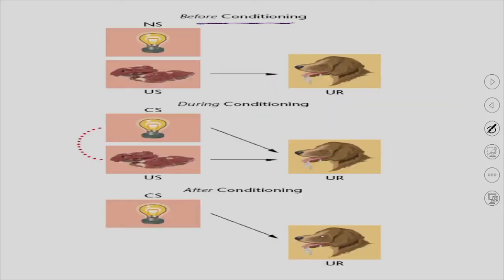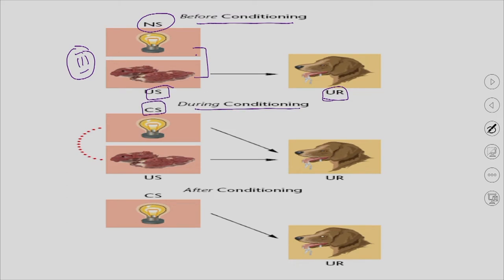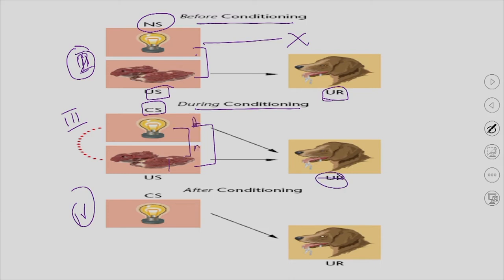Looking at the diagram: before conditioning, the neutral stimulus is a light that produces no response. During pairing (step 3), the light and meat powder are presented together and the dog salivates. The light comes first, then the meat powder — this is the unconditioned response. After conditioning (step 4), even when only the light is given, the dog salivates. The neutral stimulus has now become the CS, and the unconditioned response has become the conditioned response — that is the baseline of all classical conditioning.